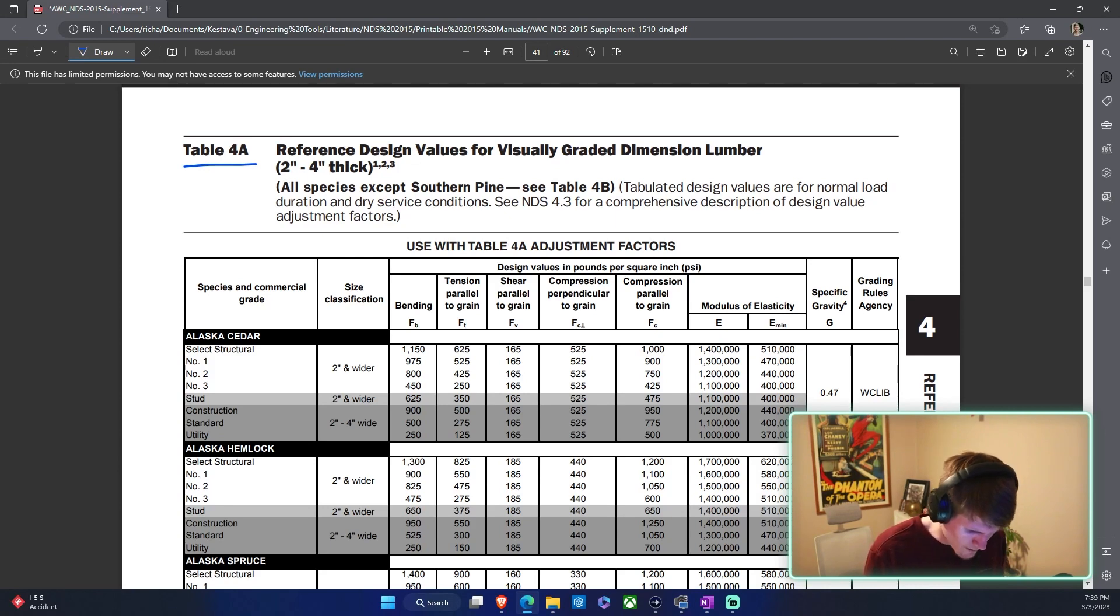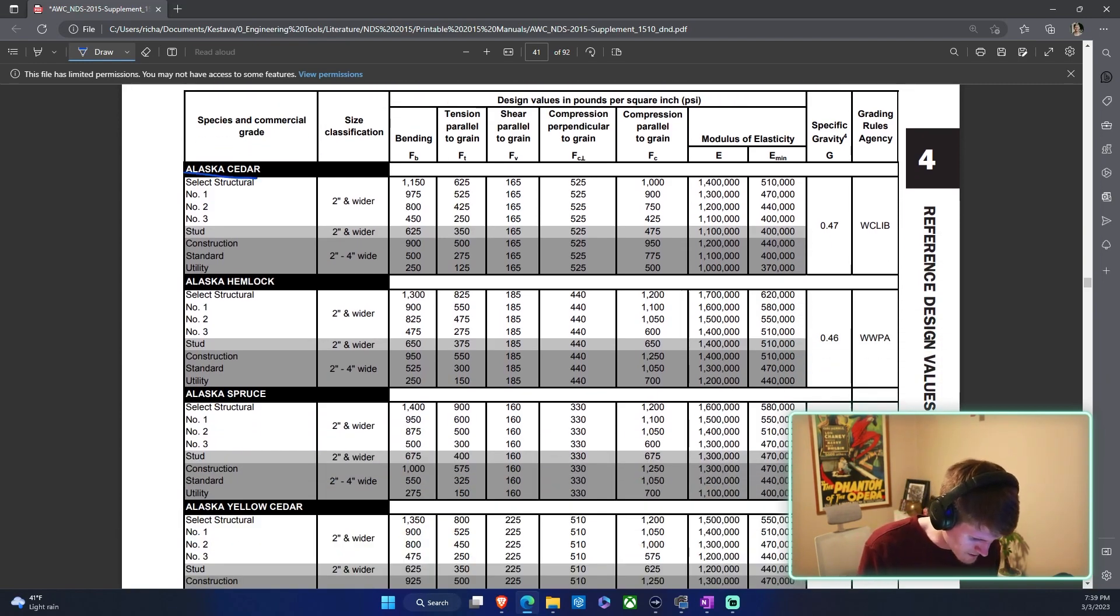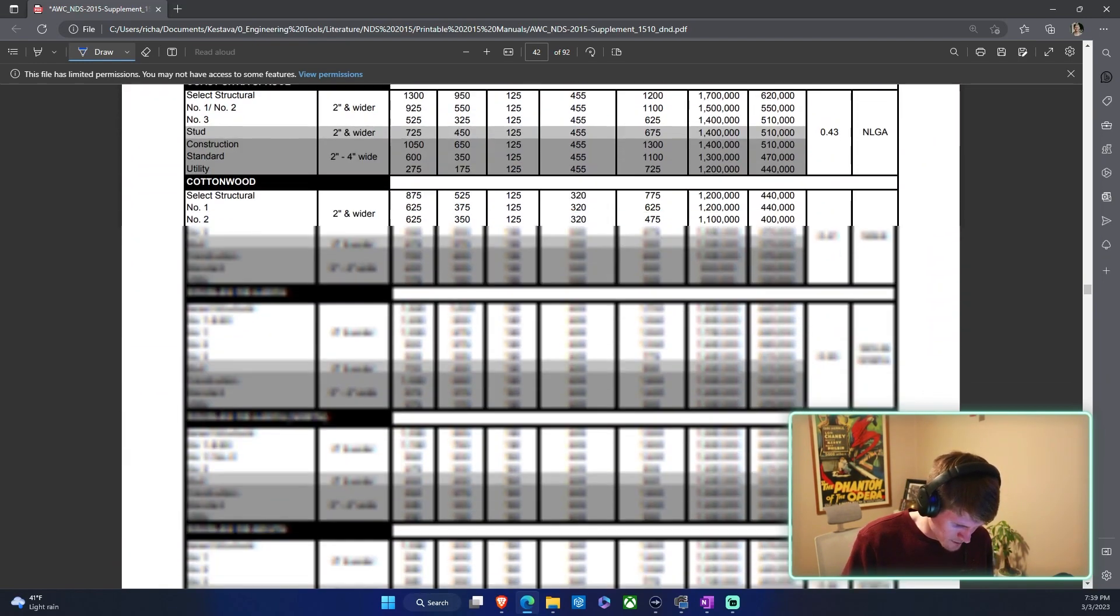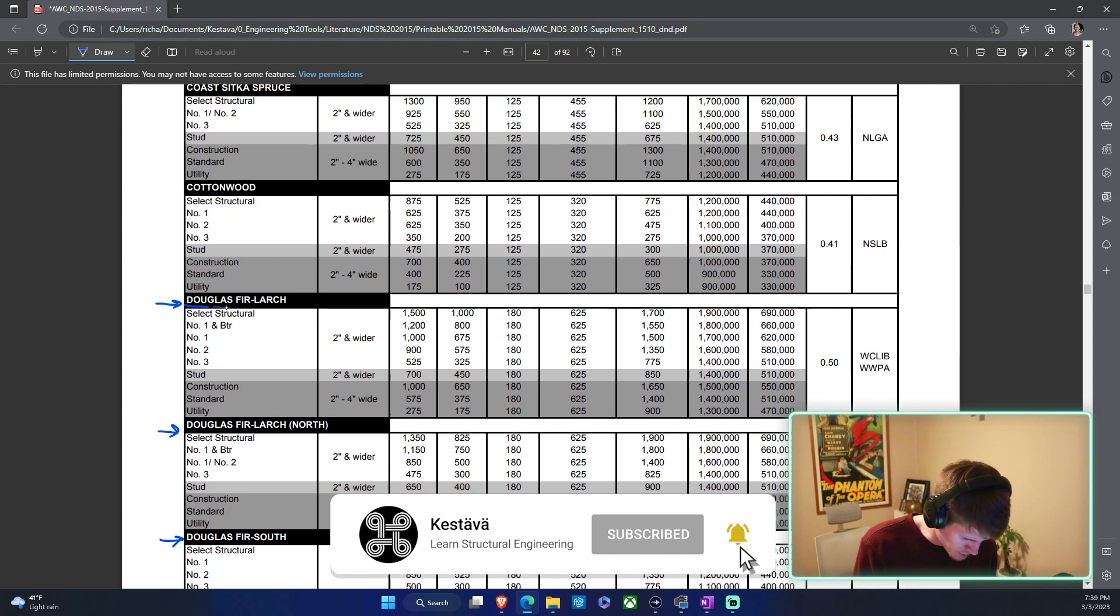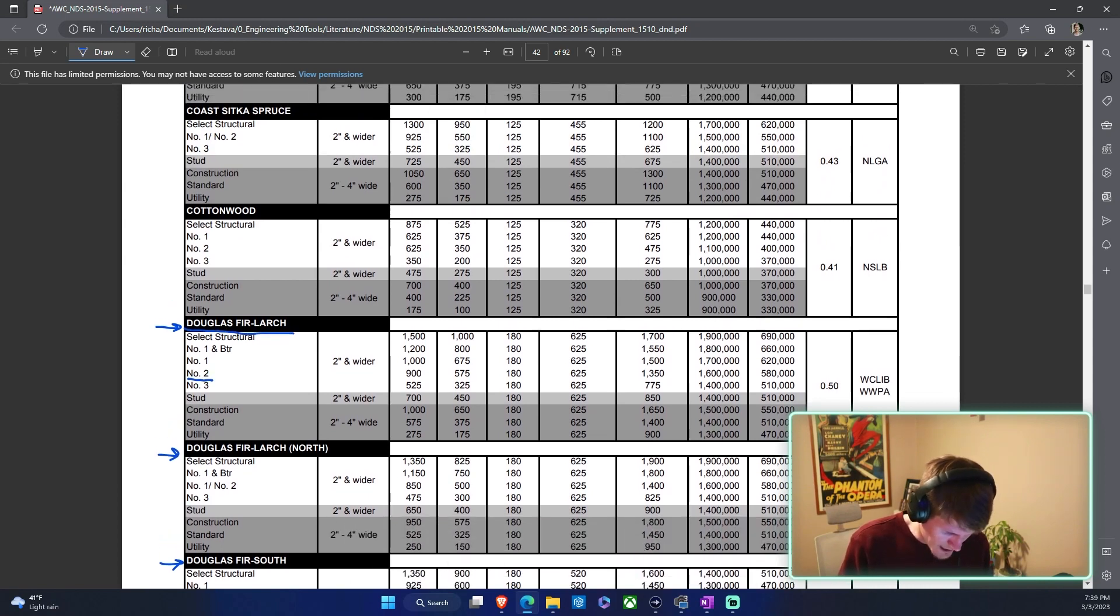You're going to head to table 4A. One thing I want to point out, there are two tables that look identical. You have the tables for two inch to four inch thick members. And then further down past this, you have tables for five inches and thicker members. So a six by six column, stuff like that has different design properties than your stud framing. So watch out for that because they look the same. If you're panicked, you might trip up and go to the wrong table by accident. So there are multiple of those tables. It's in alphabetical order by species name. We are Doug Fir, so we're going to scroll down.